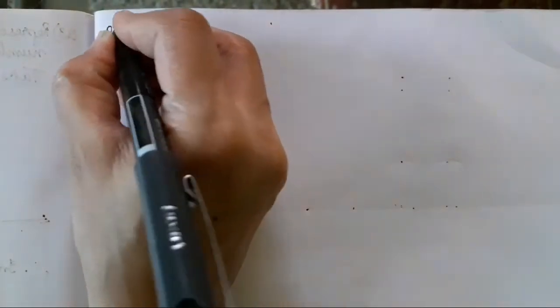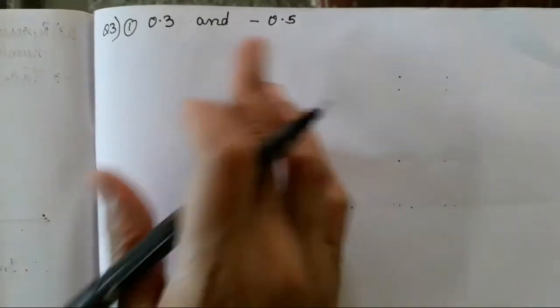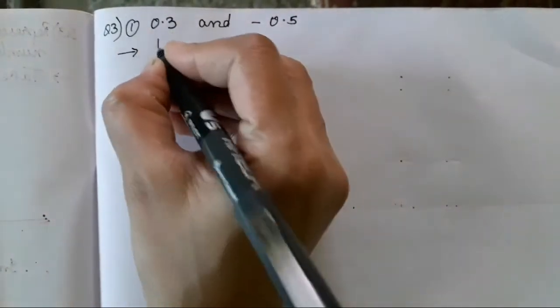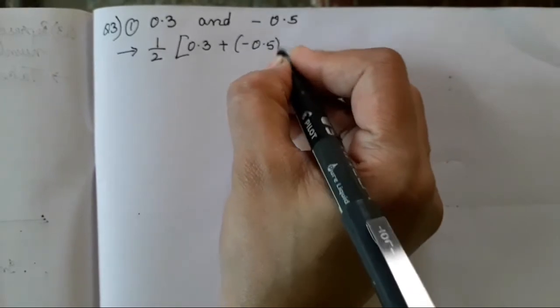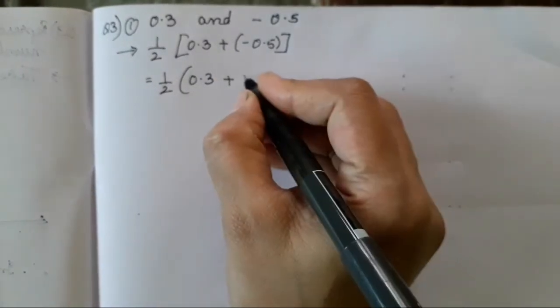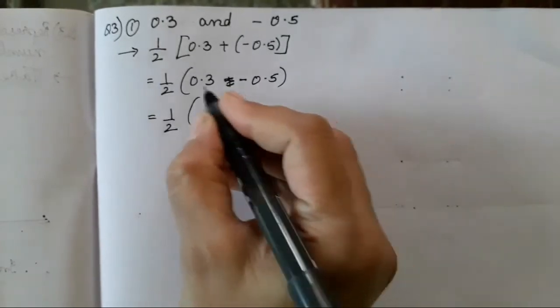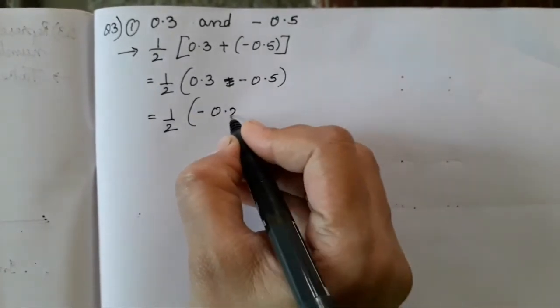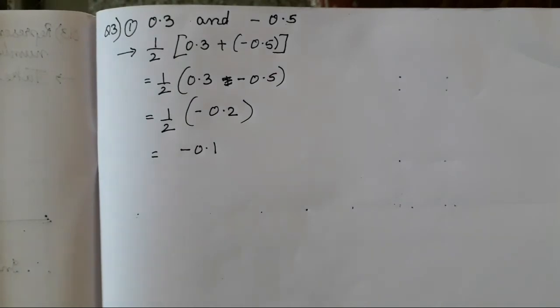Question number 3: write any 3 rational numbers between the two numbers given — 0.3 and minus 0.5. You have to write rational numbers between these two numbers. The solution uses the same steps, only the numbers change. So the first midpoint is half of (0.3 + (−0.5)) = half of (−0.2) = −0.1. This is your first rational number.